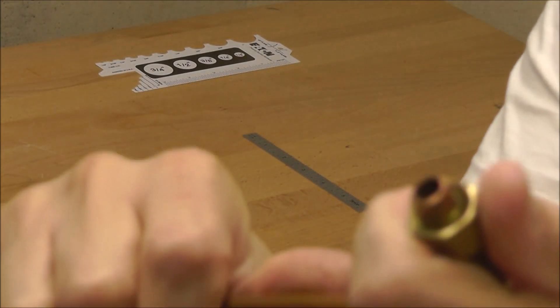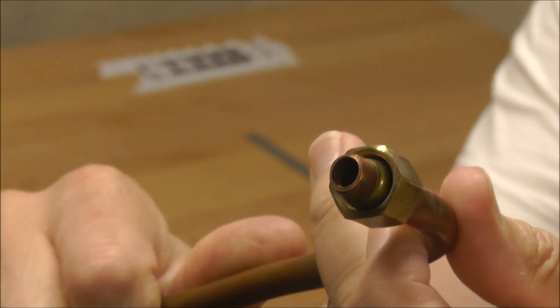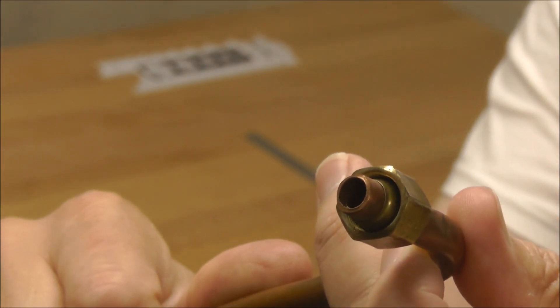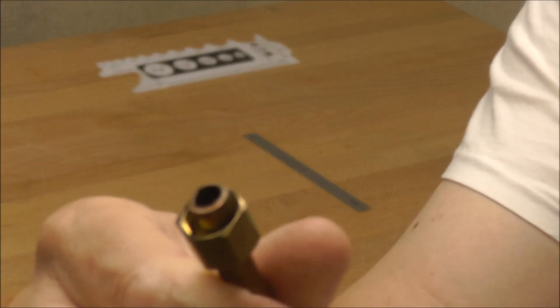This one here, it already has it on there. There's a compression ring inside as you can see and it looks like a small wedding band. And then you have the compression nut. Same thing on this side.